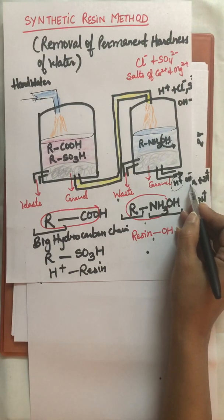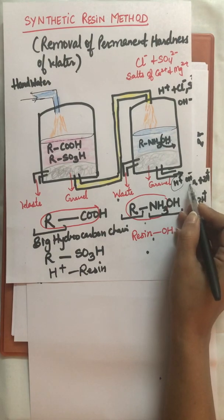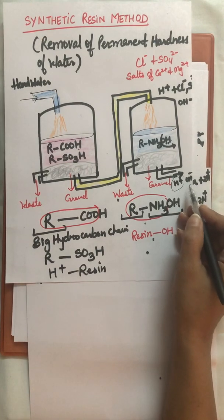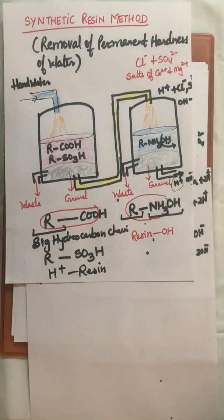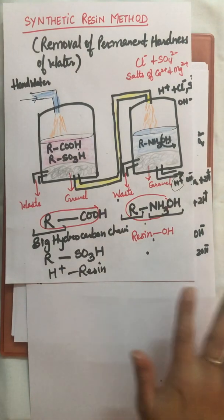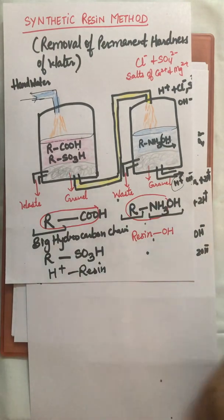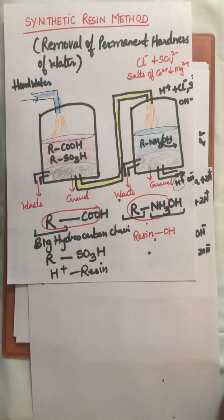The water collected at the end contains only H+ and OH- ions, so it is known as deionized water — all other ions have been removed. It is also called demineralized water because minerals such as calcium, magnesium, and sodium are all removed. This is how the synthetic resin method converts permanently hard water into soft water.